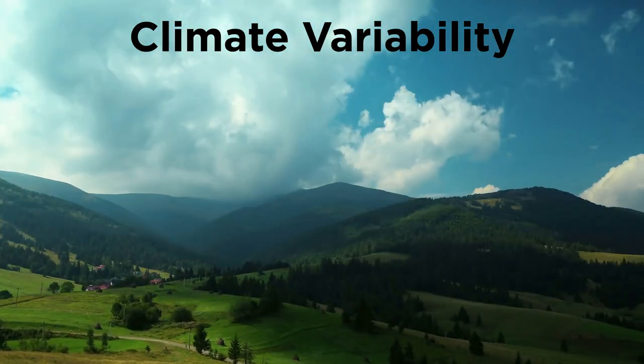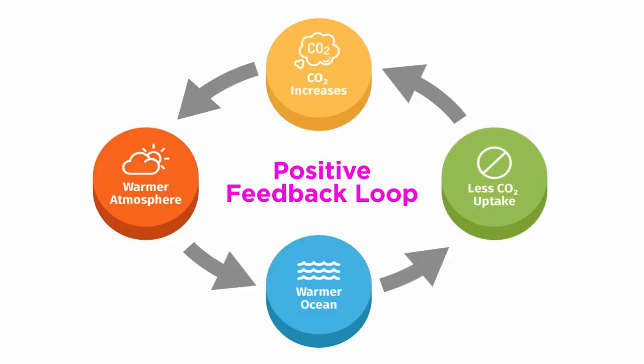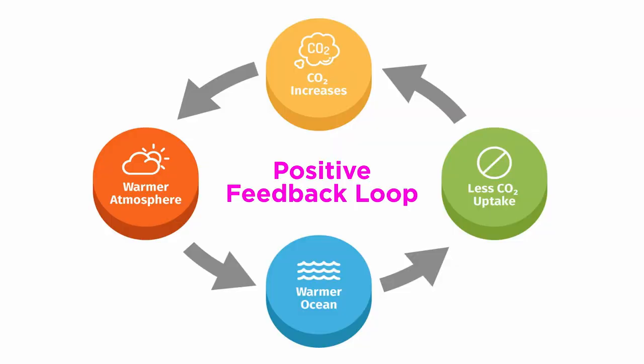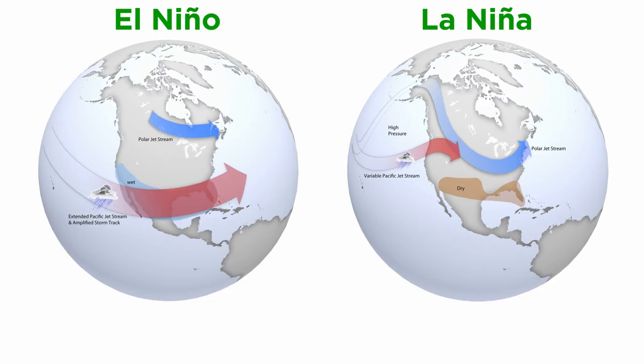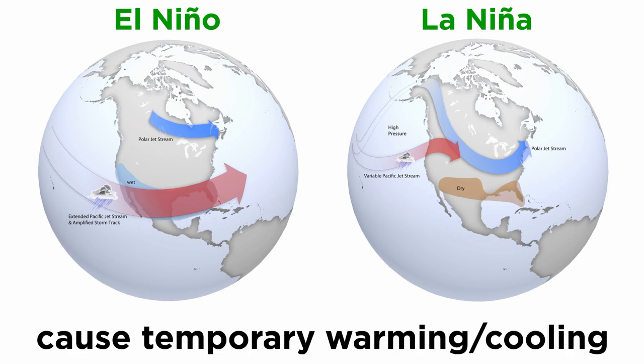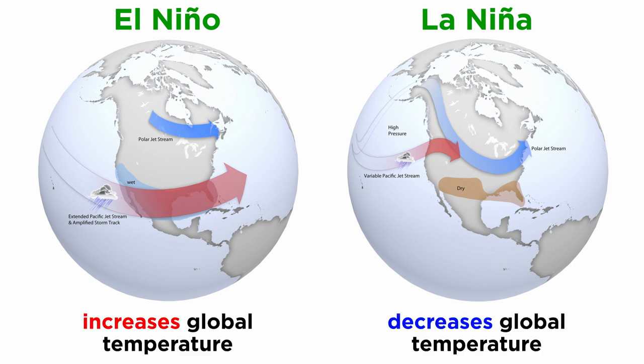Let's look at some more examples of internal climate variability. Many times these can involve positive feedbacks, or processes in which the end products of an action cause more of that action to occur in a feedback loop. One example is the El Niño-La Niña cycle, which can cause temporary warming and cooling. Both phenomena affect oceanic and atmospheric circulation patterns and influence global climate. While El Niño increases global temperature, La Niña decreases it.